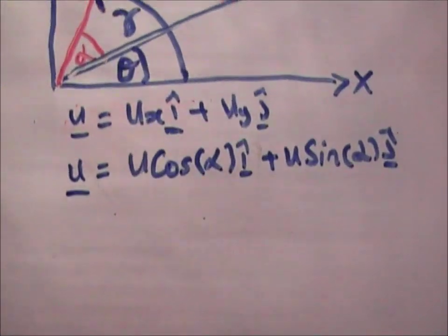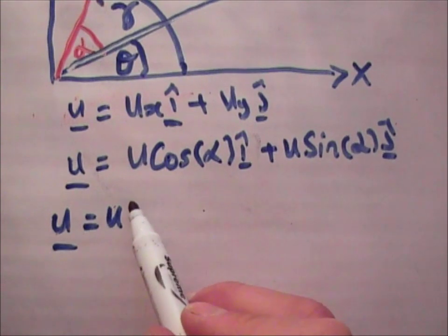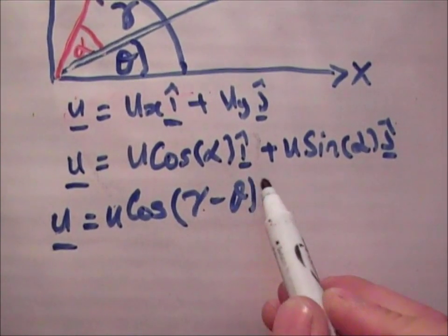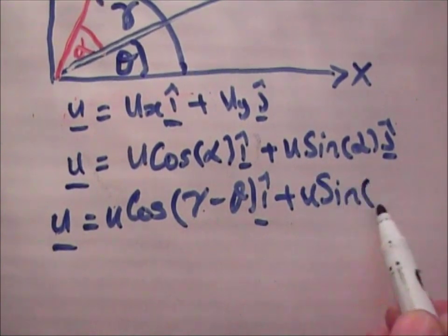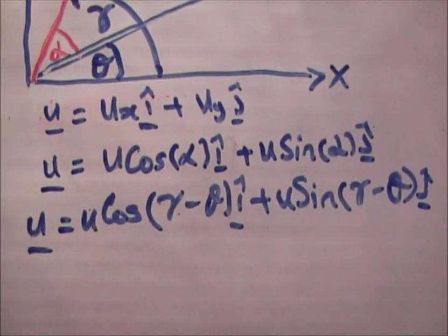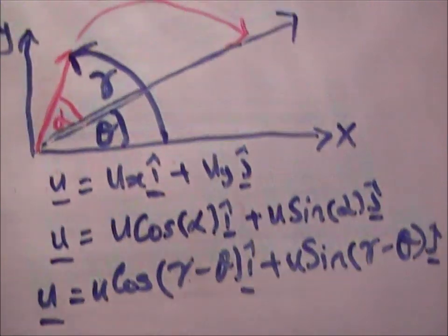But we know that alpha is equal to gamma minus theta. And that is our new velocity vector. So that expression there takes into account fully the fact that we are on an inclined plane. And we are able to apply the same reasoning for everything, distances and everything else.